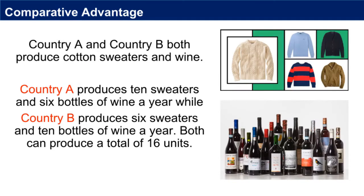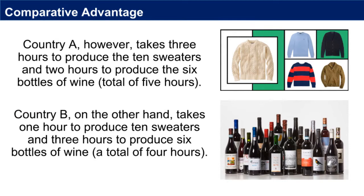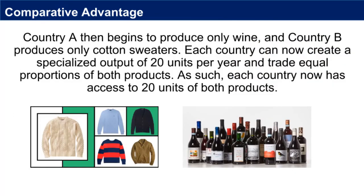Let's take a simple example. Country A and Country B both produce cotton sweaters and wine. Country A produces 10 sweaters and 6 bottles of wine a year while Country B produces 6 sweaters and 10 bottles of wine a year — both can produce a total of 16 units. Country A takes 3 hours to produce the 10 sweaters and 2 hours to produce the 6 bottles of wine, a total of 5 hours. Country B takes 1 hour to produce 10 sweaters and 3 hours to produce 6 bottles of wine, a total of 4 hours. These two countries realize that they could produce more by focusing on those products with which they have a comparative advantage. Country A then begins to produce only wine, and Country B produces only cotton sweaters. Each country can now create a specialized output of 20 units per year and trade equal proportions of both products.